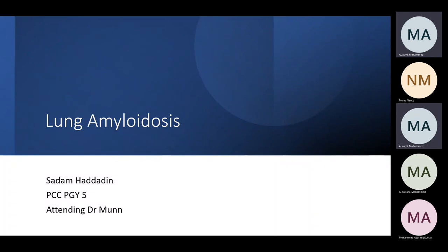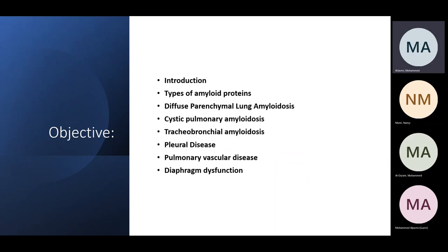Today we're going to talk about lung amyloidosis. I'll discuss the types of amyloid protein in general and their effects on the lung, covering diseases affecting the bronchi, diaphragm, pleura, and even the vascular structures.